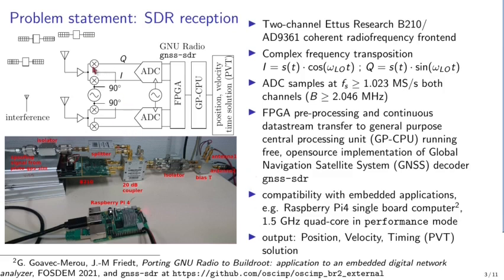SDR reception is limited to minimum hardware: the antenna, the preamp, and the IQ detector, where we create from a local oscillator two copies of a signal in quadrature — the received signal times cosine of the local oscillator frequency and times the sine — giving two quadrature quantities naturally described as a complex number i + jq (j² = −1). These IQ data are synchronously sampled by two dual-channel analog-to-digital converters, as implemented in the ETS Research B210 SDR receiver using the Analog Devices AD9361 front-end with two coherent channels sharing the same oscillator.